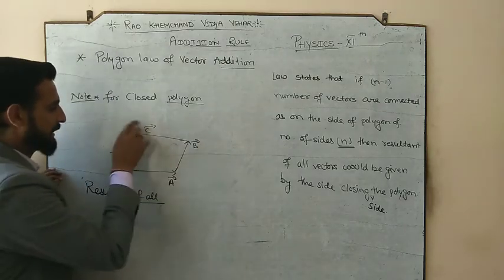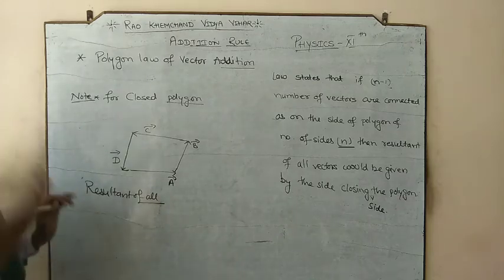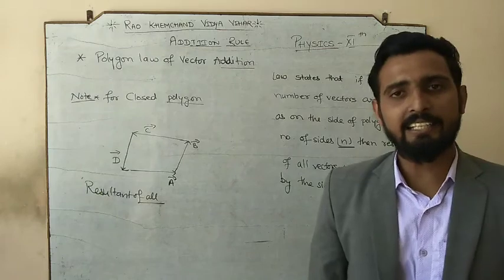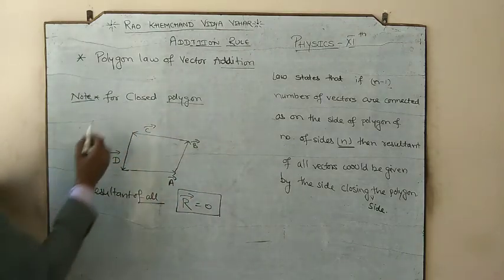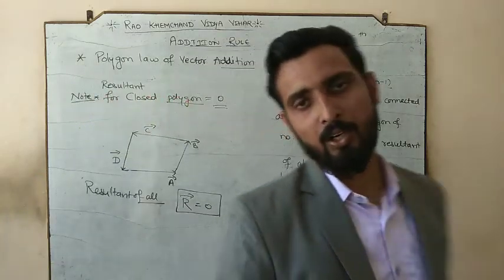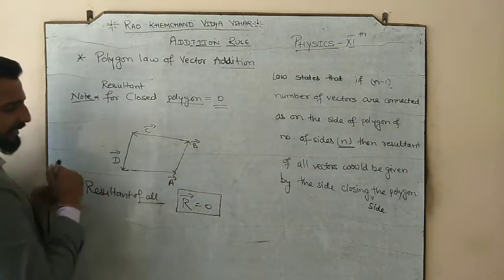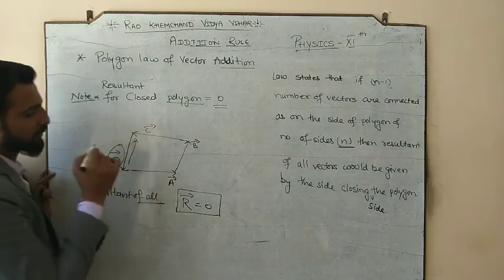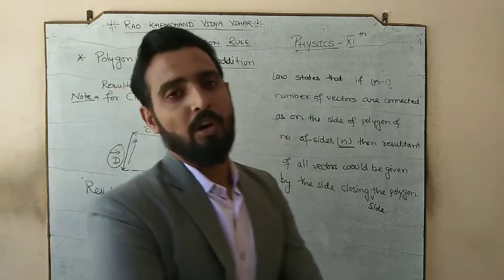So for a closed polygon, the resultant is always zero. If the vectors a, b, c, d form a closed cycle, the resultant is zero. Looking at it another way: the resultant of some sides would be equal and opposite to the remaining side, making the final resultant zero. Please note this important point: the resultant for a closed polygon is zero.